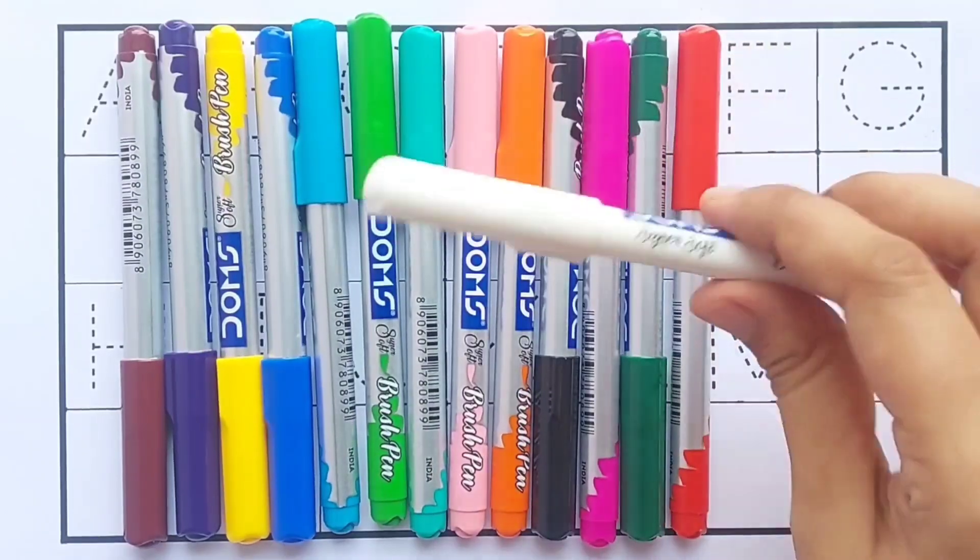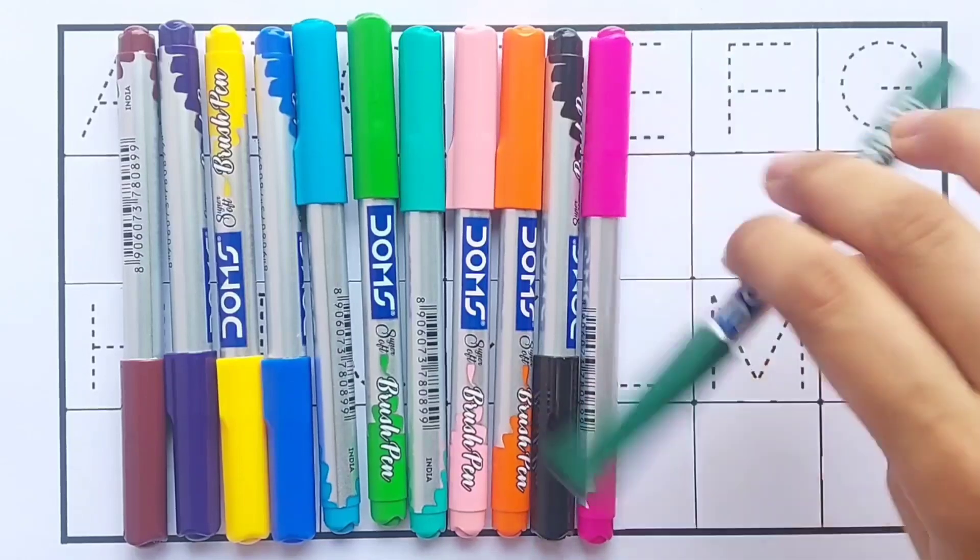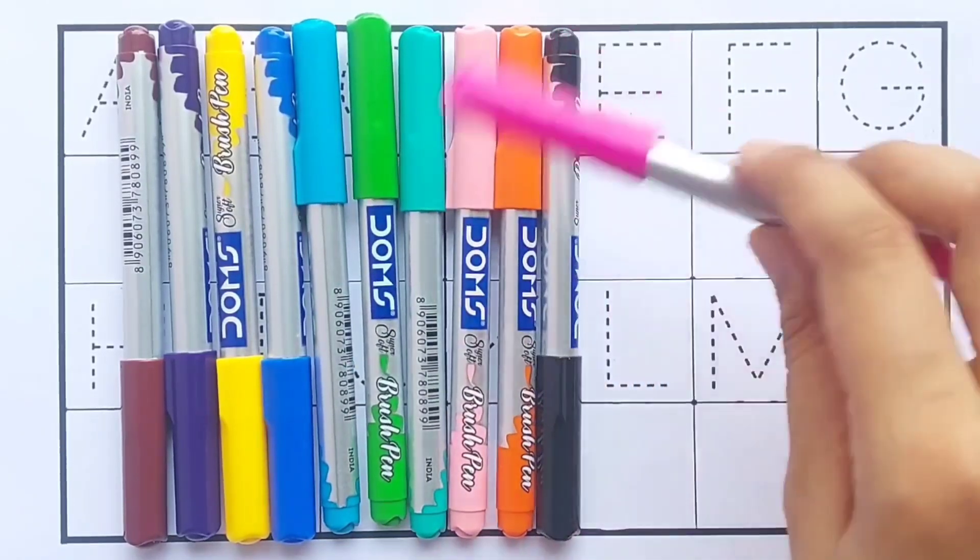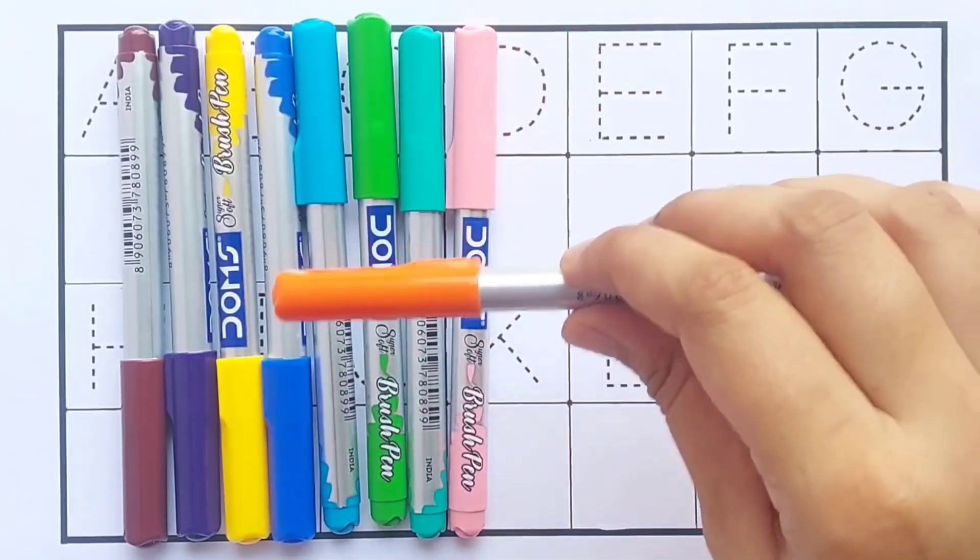First, we will learn colors name. White color, red color, green color, pink color, black color, orange color.